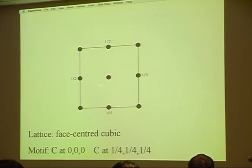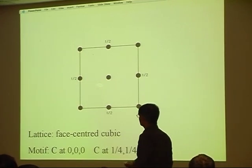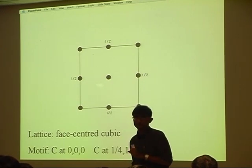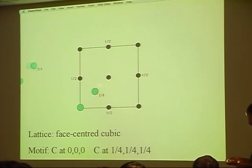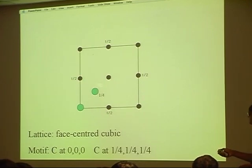Now with a face-centered cubic lattice — with face-centered lattice points and corner lattice points — I'm going to generate the diamond crystal structure. I place a carbon atom at (0,0,0) and another carbon atom at (¼,¼,¼) for every single lattice point. For a face-centered lattice point that is already at height ½, the second carbon atom then goes at height ¾. I do that for all lattice points.